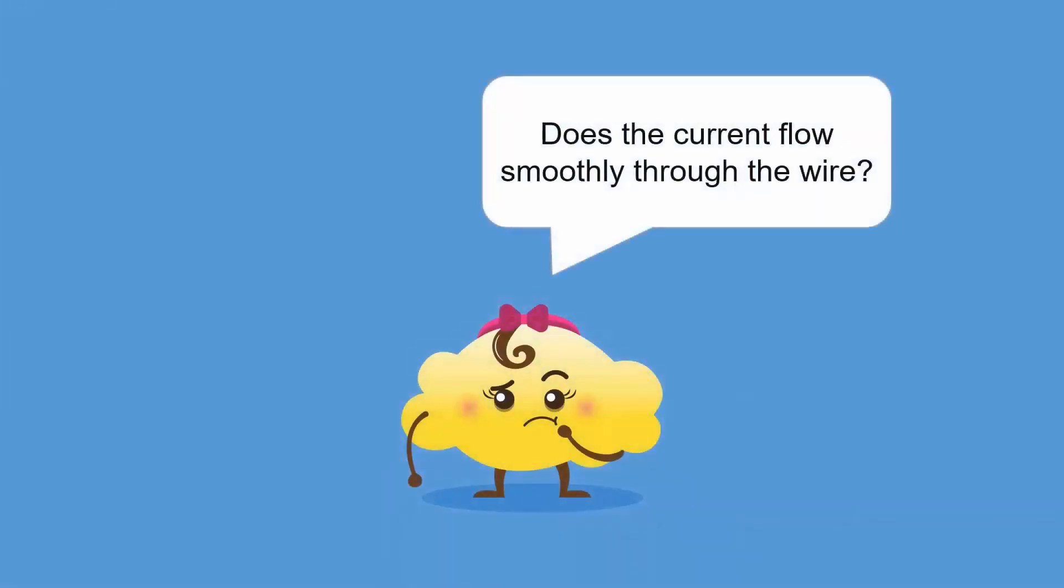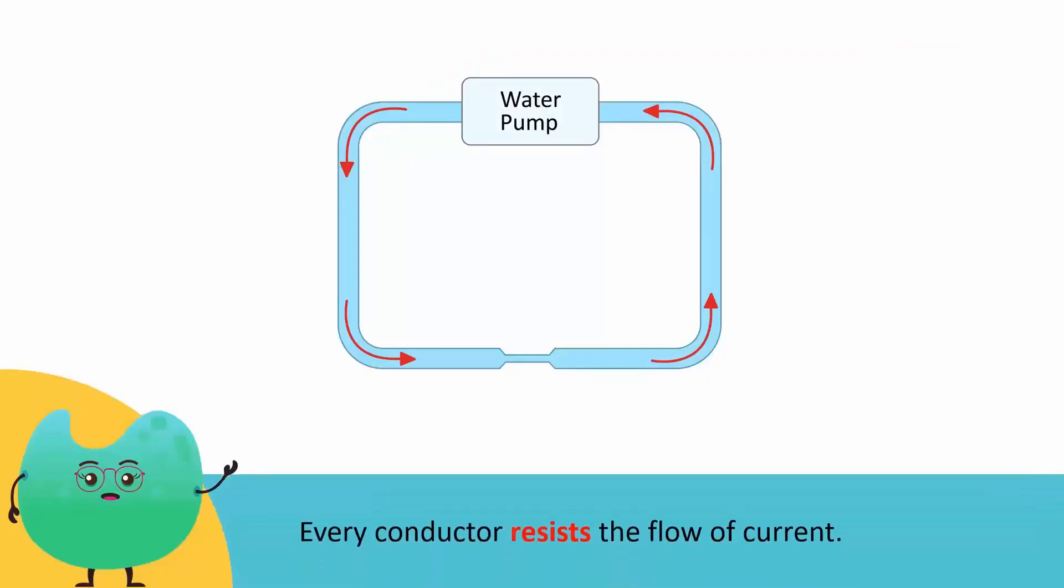Does the current flow smoothly through the wire? No. Every conductor resists the flow of current in some way, just like how some pipes allow water to flow more smoothly than others. This property is called resistance.